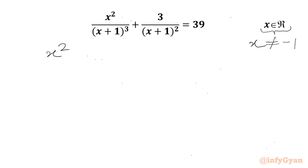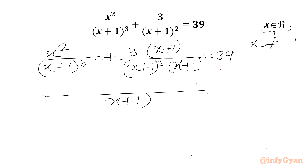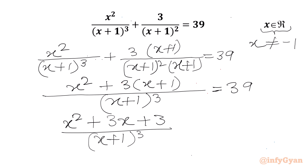Now I will write our equation: x² over (x+1)³ plus 3 over (x+1)² equal to 39. I will multiply the second term to get a common denominator of (x+1)³. So we can write, with (x+1)³ in the denominator, the numerator becomes x² plus 3 times (x+1) equal to 39.